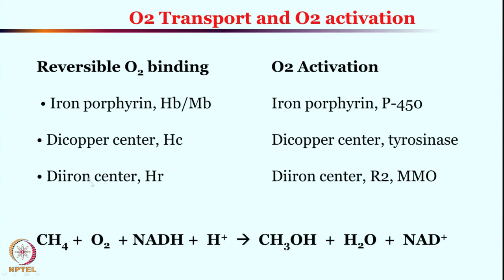We have seen the dinuclear dicopper center in hemocyanin, which can activate oxygen or bind it reversibly and deliver oxygen in the desired position. But the same dicopper center is also capable of converting phenol into catechol or catechol into quinone — tyrosinase activity. The dinuclear peroxo species forms in both cases: in one case used for reversible oxygen binding, in another for oxygen activation and substrate hydroxylation.